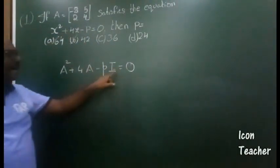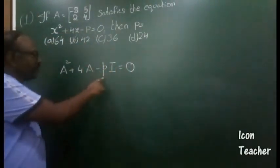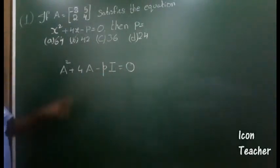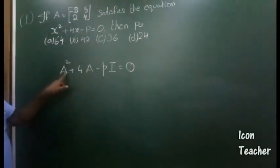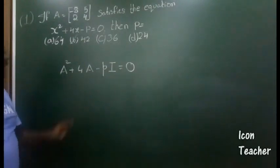You should find the value of p so that this satisfies x² + 4x - p = 0. If I substitute the matrix A, this is what we're going to get: A² + 4A - pI = 0.